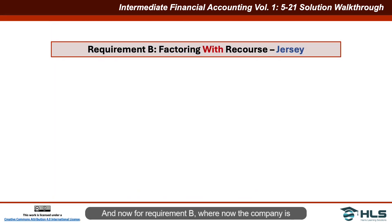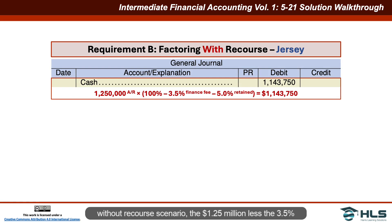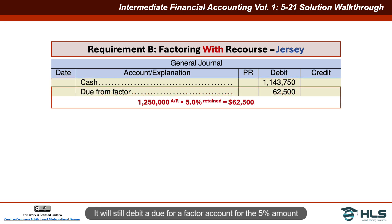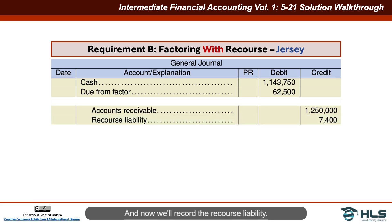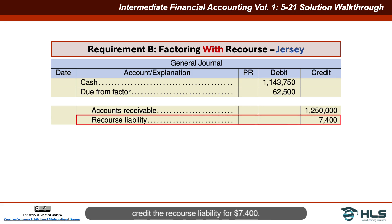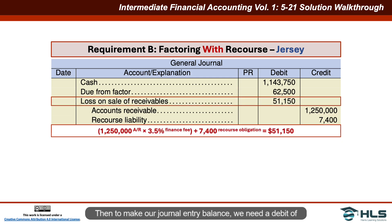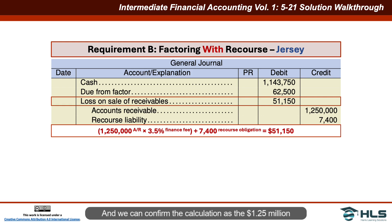For requirement B, the company is now factoring its receivables with recourse. Jersey receives the same cash as under the without recourse scenario: $1,250,000 less the 3.5% finance fee less the 5% retention. It still debits due from factor for $62,500 and credits accounts receivable for $1,250,000. We now also credit the recourse liability for $7,400. To balance, we debit loss on sale of receivables for $51,150 — confirmed as ($1,250,000 × 3.5%) + $7,400 = $43,750 + $7,400 = $51,150.